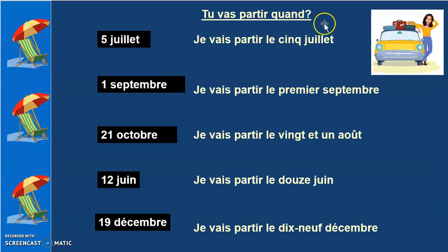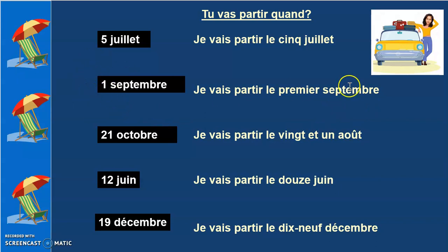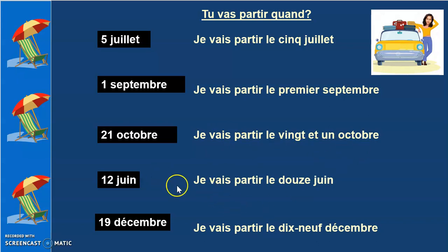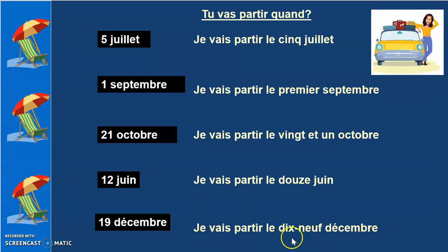There are a few more examples. Je vais partir le 1er septembre — it is a little different. Instead of writing un, which is the number, we write premier, which means the first — the first of September. Je vais partir le 21 octobre. Je vais partir le 12 juin. Je vais partir le 19 décembre — le 19 décembre. This is for the date and the month.